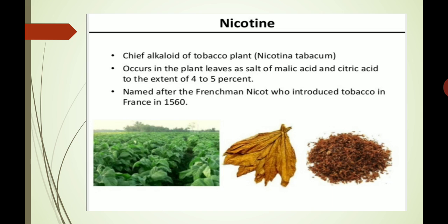Other tobacco alkaloids are nicotimine, nornicotine, and nicotirine, etc. The latter one is responsible for the aroma of tobacco smoke. The chief alkaloid of the tobacco plant, Nicotiana tabacum, occurs in the plant leaves as salts of malic acid and citric acid to the extent of 4 to 5 percent. It was named after the Frenchman Nicot, who introduced tobacco in France in 1560. Nicotine is a colorless, laevorotatory liquid with a boiling point of 246 degrees centigrade, but its salts are dextrorotatory. It becomes darkened on exposure to air due to auto-oxidation. Nicotine is miscible with water in all proportions at temperatures below 60 degrees.